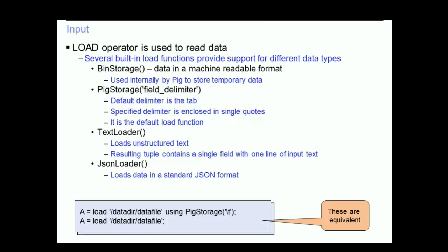Let's look at an example. A equals load '/data_dir/data_file' using PigStorage('\t'). This will read data from a file called data_file, located in the /data_dir directory. Since the PigStorage function is being used, the data is expected to be in a delimited format with the tab character as the delimiter. The results are then placed into a relation called A.